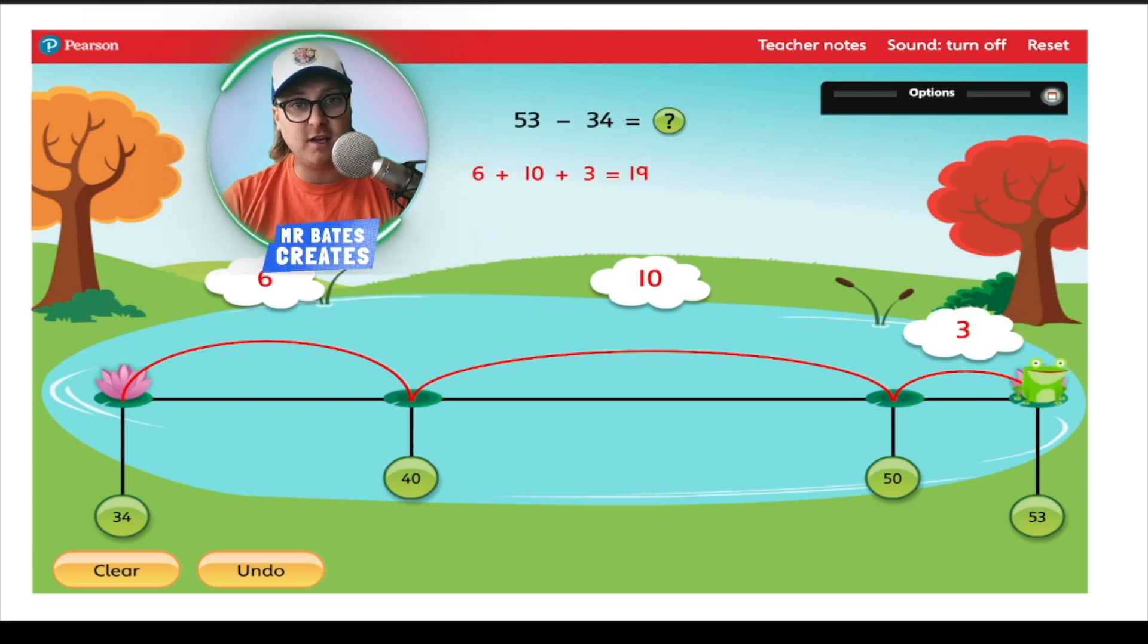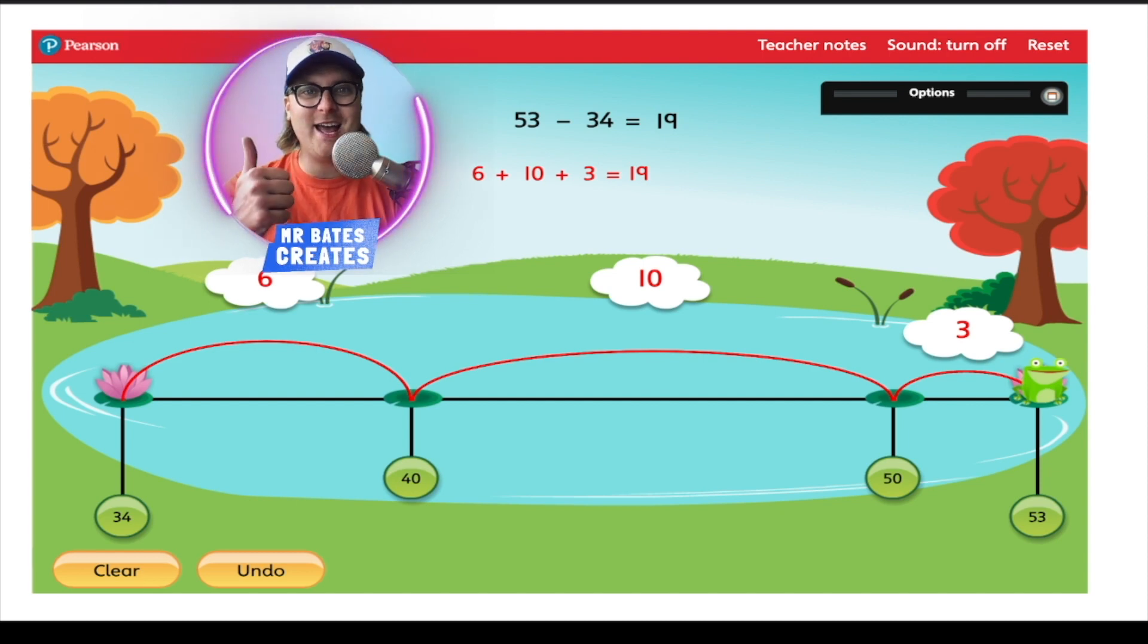So, we've made our jumps of 6, 10 and 3 to count up to get to our number. Now, the maths hasn't finished yet. We now need to find out how much they've jumped. So, we need to add them together. 6, add 10, add 3, gives us the answer of 19. So, 53, take away 34, it's got to give us the answer of 19. Brilliant!